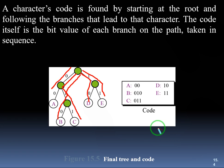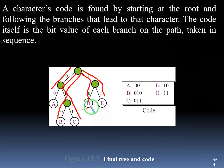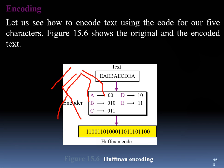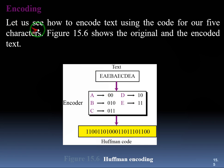We match codes by assigning zeros and ones along the tree branches. The final codes for a, b, c, d, e are now established. Coming to encoding: once we have a character, we need to do some encoding. Let us see how to encode text using the codes for our five characters.